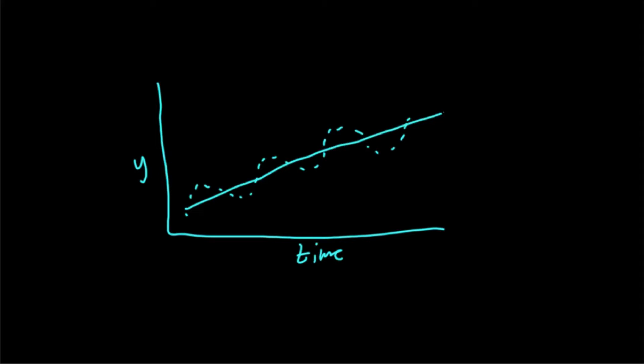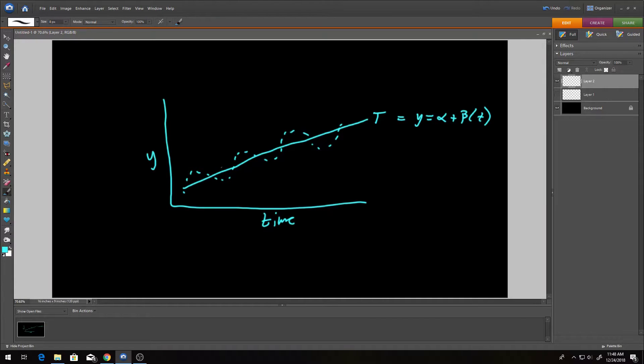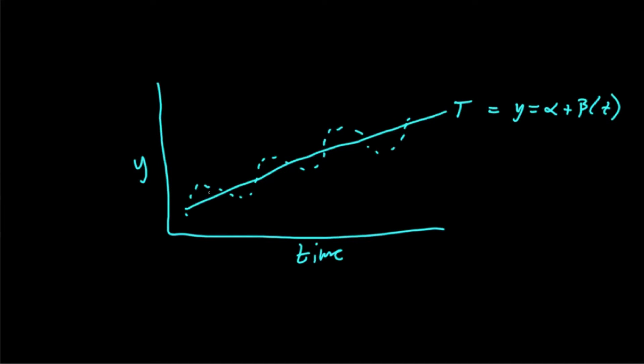The first part as we mentioned here would be your trend. This is something as simple as a regression, so you'd have like a y equals alpha plus beta times t. And you can see here though that this model is okay but it over predicts in a consistent fashion in these areas, and then it under predicts in these areas in a similar fashion. One way to think about this is say an annual issue here.